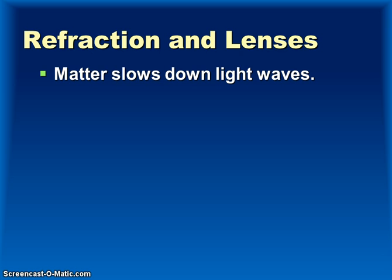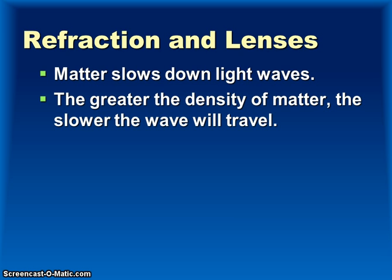What happens to light as it travels through matter is that the matter can actually slow down these light waves. Because light is made of little packets of energy, those packets will begin to slow down as they travel through that material, but will continue to travel fast once past it. The greater the density of the matter, the slower the wave will travel, because more particles means it takes longer for those packets of light to move through.